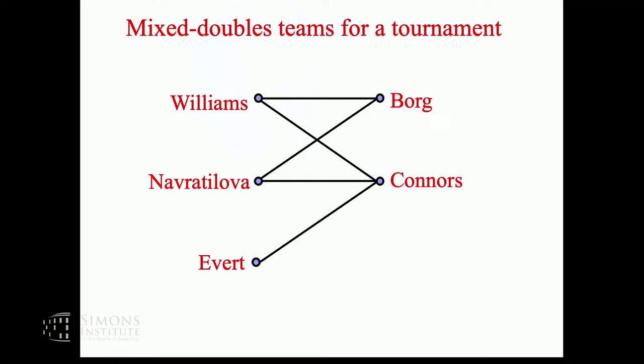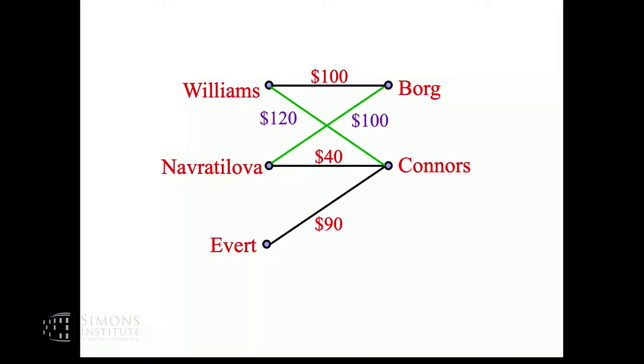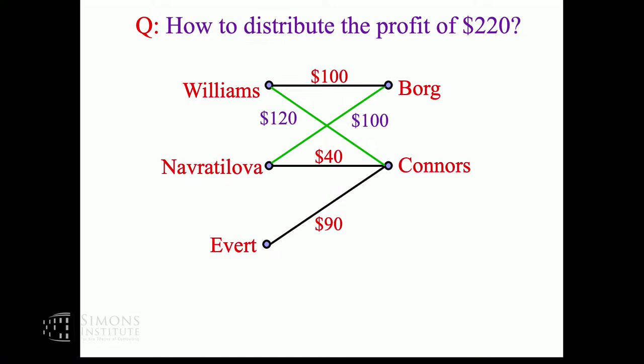Here's a tennis club which has some rather famous players - women players and men players. Each edge means they can form a team and enter into a tournament. These are the expected winnings of each team if they enter the tournament. The tennis club would like to put in teams that maximize the earnings by picking teams that maximize the weight of the matching formed.